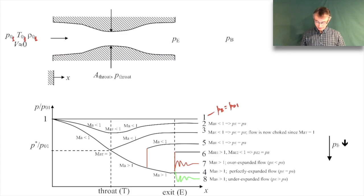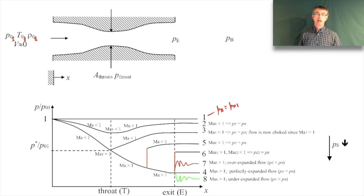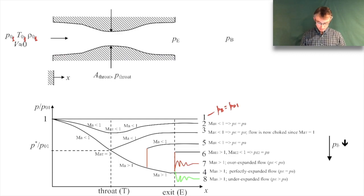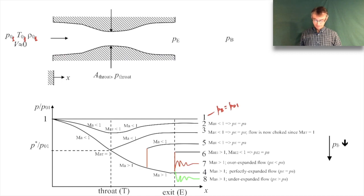For cases two and three, the flow everywhere is isentropic — there are no shock waves anywhere. The stagnation pressure everywhere is just P₀₁, and you can use the isentropic relations everywhere. It's all completely isentropic.